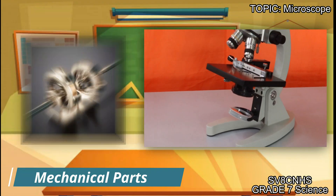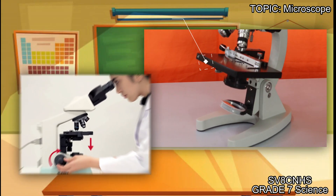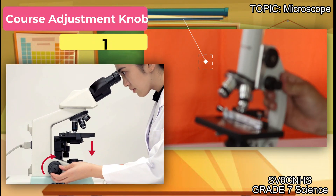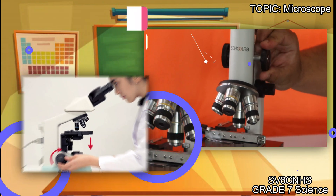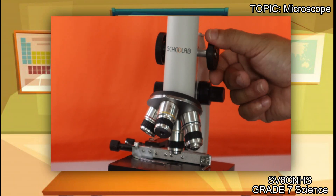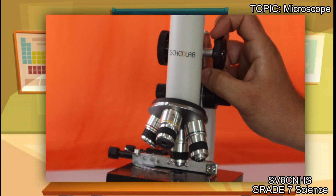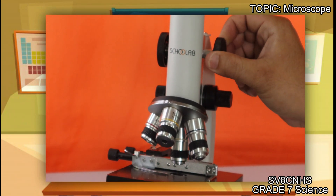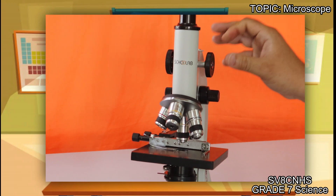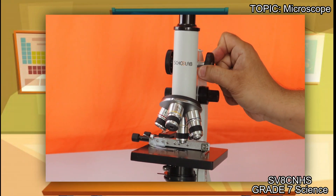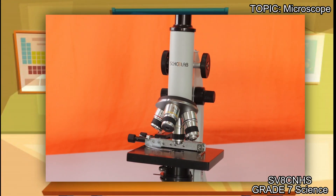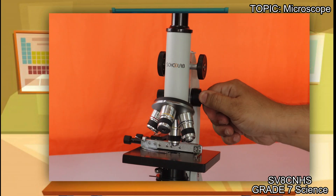We will now proceed to the mechanical parts. Our mechanical parts involve, number one, the coarse adjustment. Here in our microscope is our coarse adjustment. It can be adjusted upward or downward. The adjustment depends on whether the specimen is clear in our compound microscope. There are times when even after adjusting it, the specimen is not yet clear. In that case, we will proceed to the second part, which is what we call the fine adjustment.